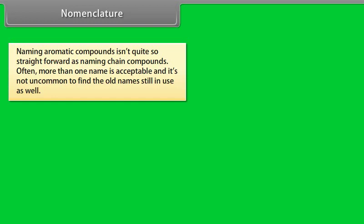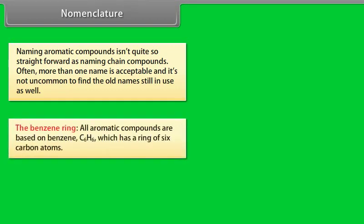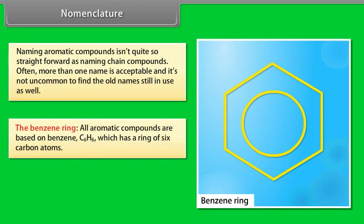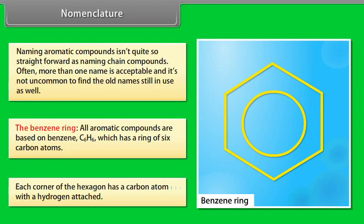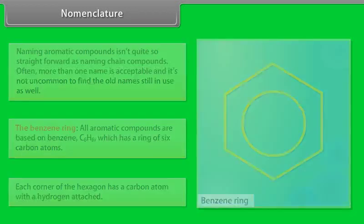Nomenclature. Naming aromatic compounds isn't quite so straightforward as naming chain compounds. Often, more than one name is acceptable and it's not uncommon to find the old names still in use as well. The benzene ring. All aromatic compounds are based on benzene, C6H6, which has a ring of six carbon atoms and has this symbol. Each corner of the hexagon has a carbon atom with a hydrogen attached.